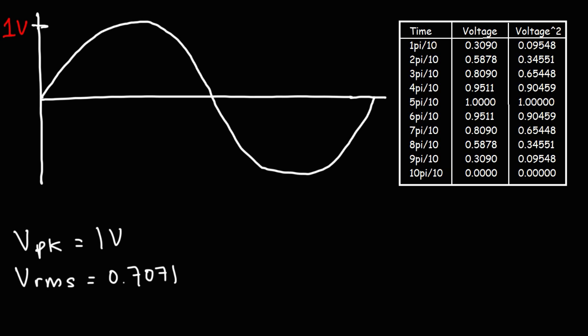Let's see if we can calculate that RMS voltage using the table on the right. We're going to find the RMS voltage of the first half of the sine wave. Going back to trig, the period of a sine wave is 2π, so the halfway point is π. We'll break it up into 10 equal parts: 0, π/10, 2π/10, 3π/10, 4π/10, 5π/10, 6π/10, 7π/10, 8π/10, 9π/10, and π (which is 10π/10). We have voltage on the y-axis and time in terms of π on the x-axis.